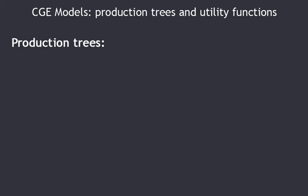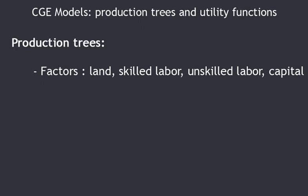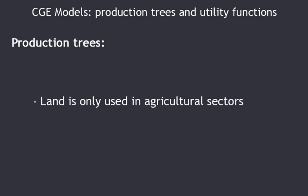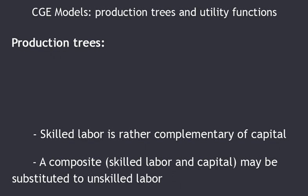What are we going to change? First, four factors will be introduced instead of two: land, unskilled labor, skilled labor, and capital. Then we will introduce the fact that land is only used in agricultural sectors. We will also introduce an idea found in many computable general equilibrium models: skilled labor is rather complementary to capital. When we substitute machines for labor, we tend to substitute machines for unskilled workers — replacing workers with a composite factor combining skilled labor and capital.